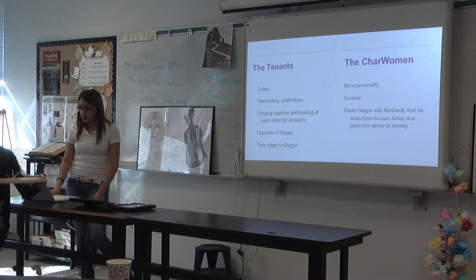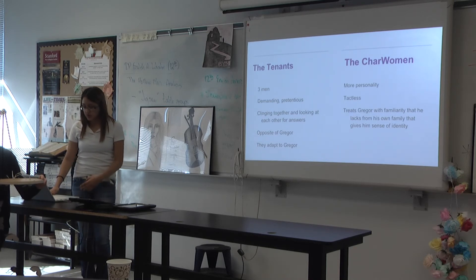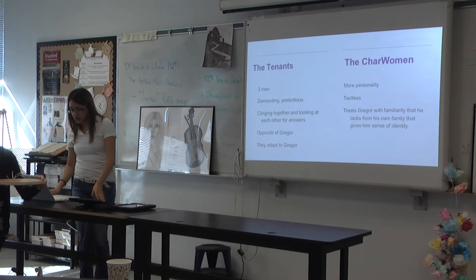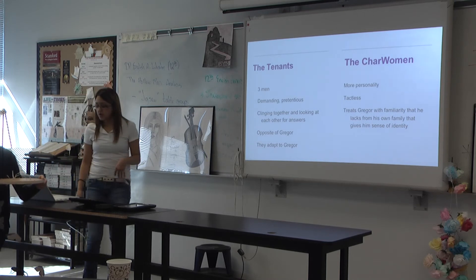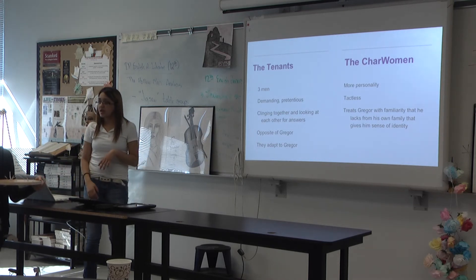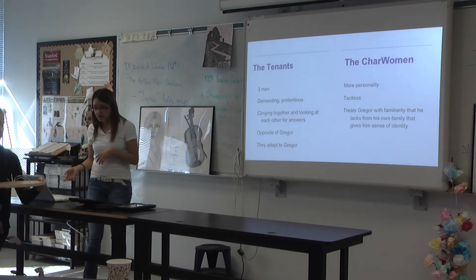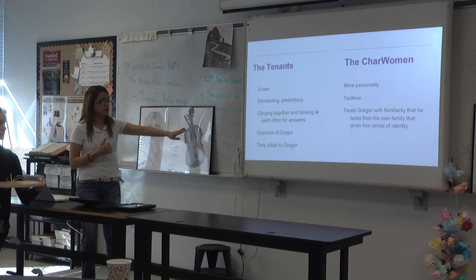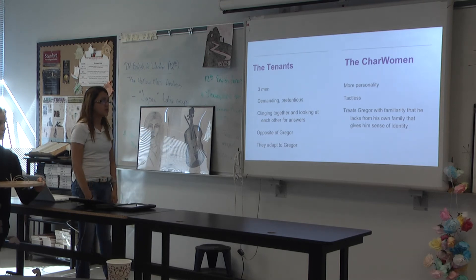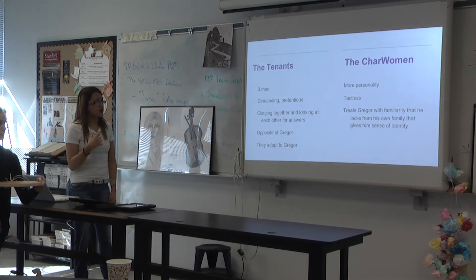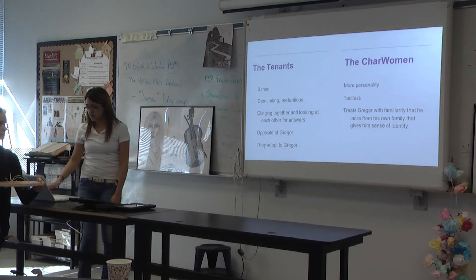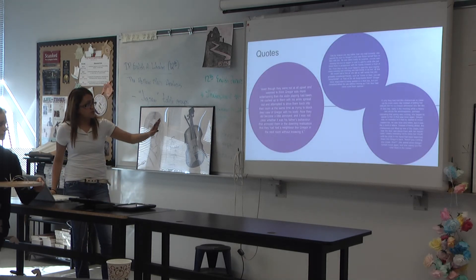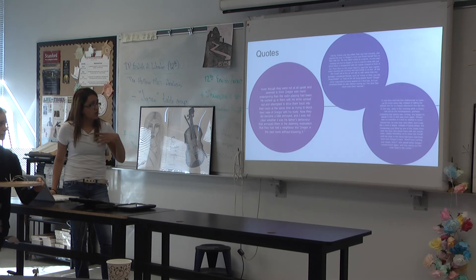This is more detailed explanation about the tenants — the three men. They're demanding and pretentious, leaning together, looking at each other for answers — opposite of Gregor. But yet at the end they adapt to Gregor and everything. The charwoman actually has a little bit more personality. She treats Gregor with familiarity that he likes from his own family, and that gives him a sense of identity.